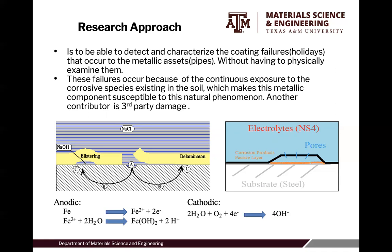These failures occur because of the continuous exposure to the corrosive species existing in the soil, which makes the metallic components susceptible to the natural phenomenon of corrosion. Another contributor is third-party damages, which consists of poor surface preparation, unqualified coating application, soil stress, and mechanical damage by backfill. Here we have a representation of how corrosive species are absorbed by our coating — the coating we use is FBE, which is fusion bonded epoxy. As it's absorbed by the coating, we get blistering, and as it reaches our steel substrate, it causes delamination, and then we have our holiday.